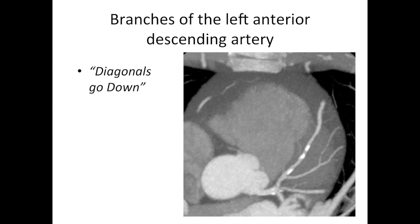The left anterior descending artery has some branches. There is a branch here, and also these little tiny branches on this side. There's an easy way to remember what to call these branches — a great radiologist in Edinburgh told me: diagonals go down. Very simple and easy to remember. This is a diagonal branch because it's going down. This is the front, this is the back, this is going down — diagonals go down. So this is a diagonal branch.